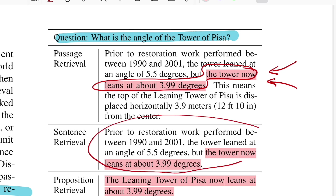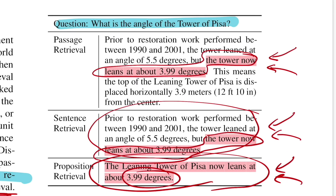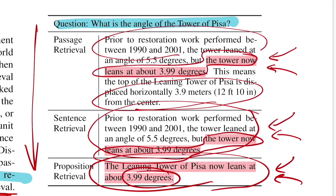With a sentence, there's just one sentence you need to get to — a single sentence that may contain your answer. Whereas with propositions, these are even smaller segments compared to sentences that exactly contain the answer, which is 3.99. As we go from top to bottom, the confusion for the downstream LLM model to extract the answer is reducing significantly, because now it need not deal with other numbers it was seeing in the passage or in sentences.